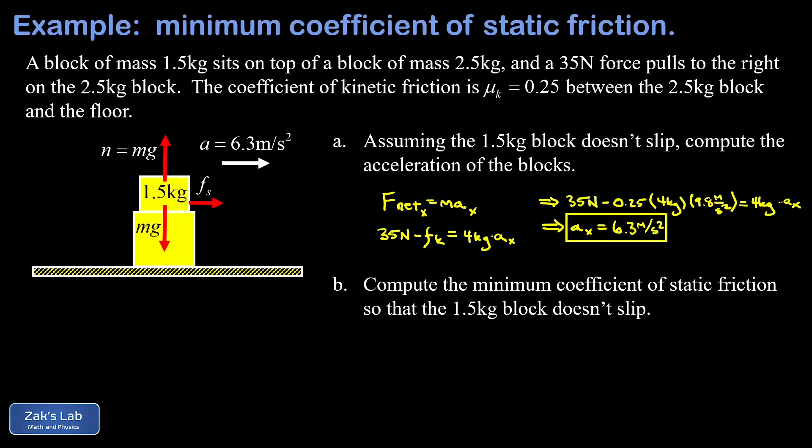So that friction force must point to the right. That rough surface on the 2.5 kilogram block moving to the right is locked in to the bottom surface of the 1.5 kilogram block and pushing it to the right. Now at some point you could accelerate the system so rapidly that you'd overwhelm the static friction force and slipping would begin.